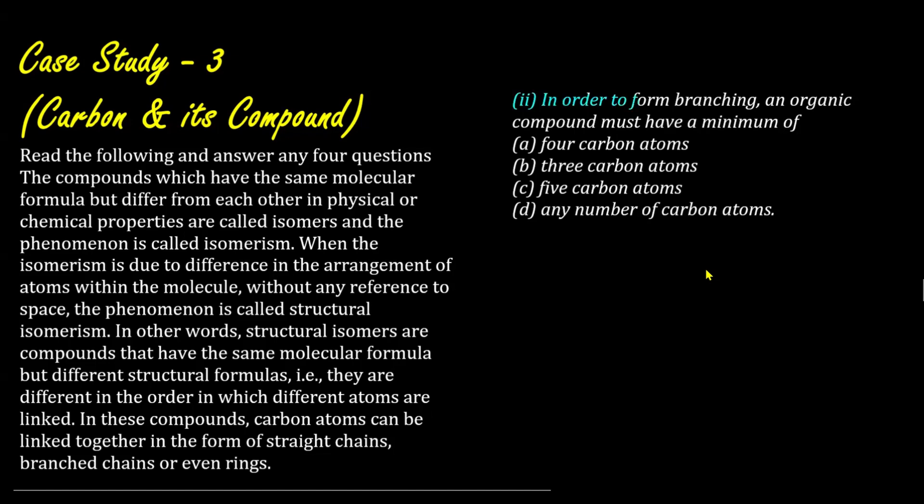The second question is this. In order to form branching, an organic compound must have minimum of what? As you know that branching, let's say if I have to do branching, I cannot do branching with the first carbon atom. And first and last, it cannot be branched with the first. So for a branching, I need minimum 3 carbon atoms in a straight chain. Minimum I'm talking about. Therefore, since I have to branch and attach a carbon, I can see that minimum number of carbon is how much? 3 plus 1, 4. So the correct option in this case should be option A. Minimum 4 carbon atoms should be needed.